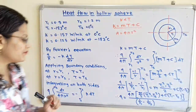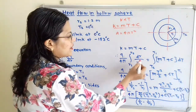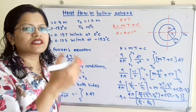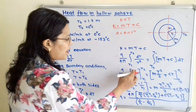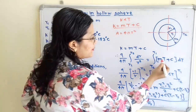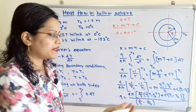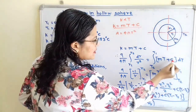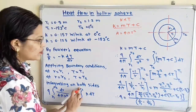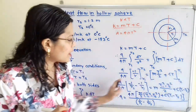Instead of K we substitute MT plus C. Since 4π is constant we take it outside the integration, giving Q divided by 4π times the integral of dR/R² from R1 to R2. The integration of 1/R² gives minus 1/R, so we write minus 1/R with limits R1 to R2. On the right-hand side, integrating (MT + C) dT gives MT²/2 plus CT, with limits changed from T2 to T1 to remove the minus sign.